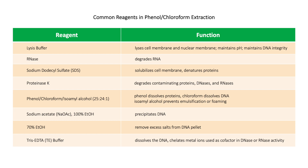Phenol-chloroform-isoamyl alcohol is used to separate proteins into the organic layer and the DNA into the aqueous layer. Phenol dissolves proteins while chloroform enhances phase separation. Isoamyl alcohol prevents emulsification or foaming of the reaction. Sodium acetate and 100% ethanol are used for DNA precipitation. 70% ethanol washes excess salts from the extracted DNA. Tris-EDTA (TE) buffer dissolves the extracted DNA and prevents degradation by chelating metal ions, which are cofactors for DNase and RNase activity.